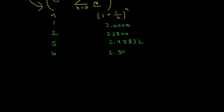When n is 100, its value is 2.70481. And when n is 1000, we're taking a bigger n now, and its value is 2.71692.